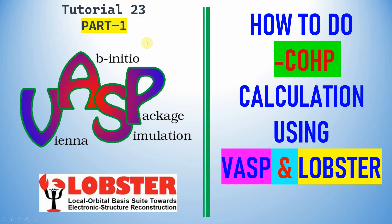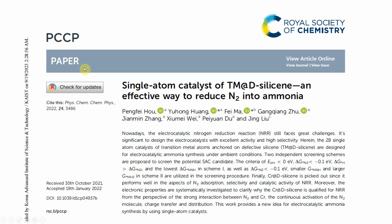Dear friends, this is tutorial 23 in VASP — Part 1 of the LOBSTER calculation. In this video, you can learn how to do COHP calculation using VASP under LOBSTER code. This LOBSTER code is very useful to understand the bonding nature of molecules and crystals — diatomic small molecules like N2, O2, and more. This is a paper published in the Physical Chemistry Chemical Physics journal, where they used LOBSTER code to understand the bonding nature of free N2, adsorbed N2, and hydrogenated N2 molecules.